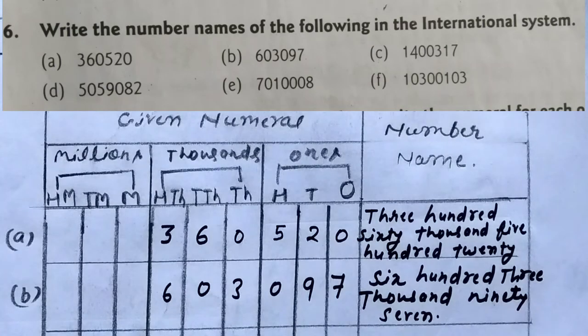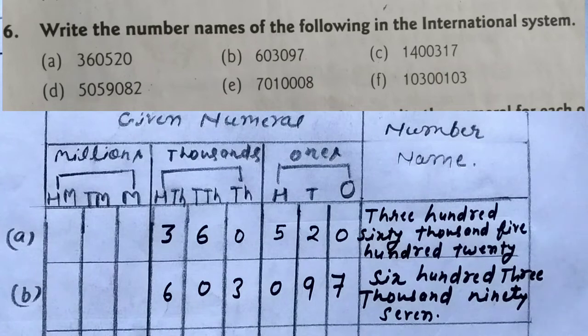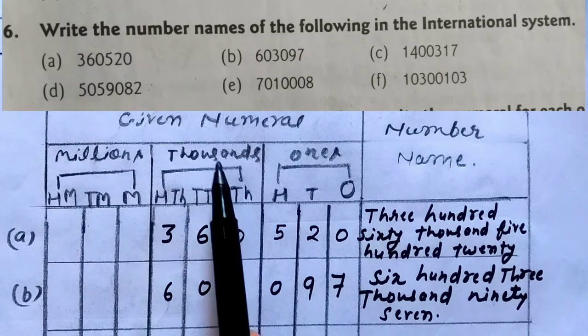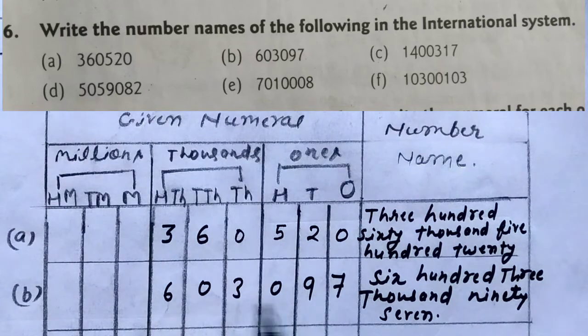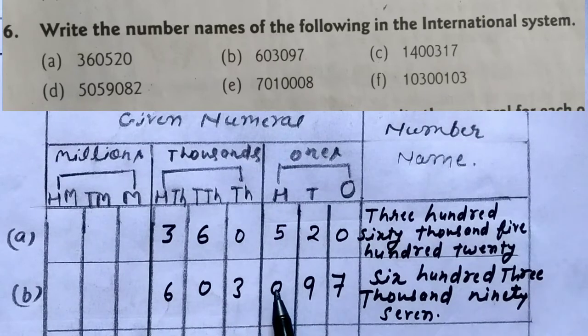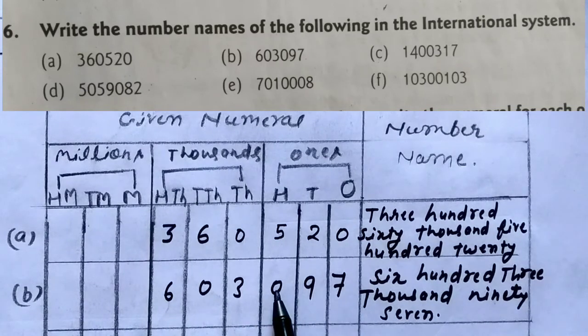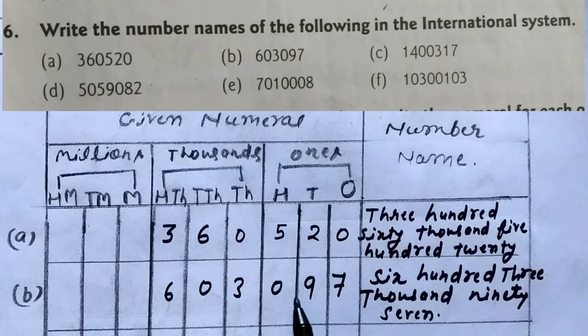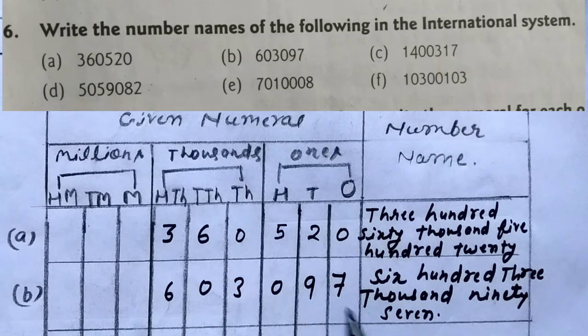Look at the second. We place the numeral in place value chart and now read it. 603, it is under thousands period. So 603, what period? Thousand. We write thousand. And 097. In hundreds there is nothing, there is no digit in hundreds: 0. That means that we are not going to read it. We will read 97.